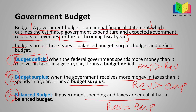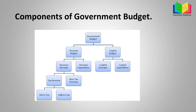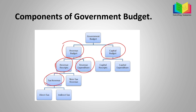Now let's move on to the components of government budget — I will discuss these components in much more detail in the next part; here we just need a summary. On the left side we have revenue budget; on the right side we have capital budget. The revenue budget is further divided into revenue receipts and revenue expenditure. Revenue receipts is further divided into tax revenue and non-tax revenue, and tax revenue into direct tax and indirect tax. The capital budget is further divided into capital receipts and capital expenditure.